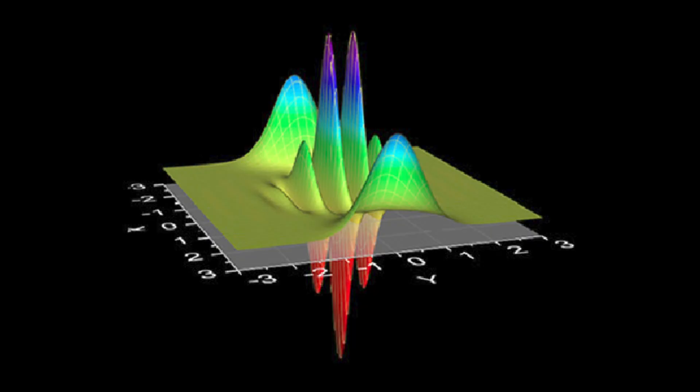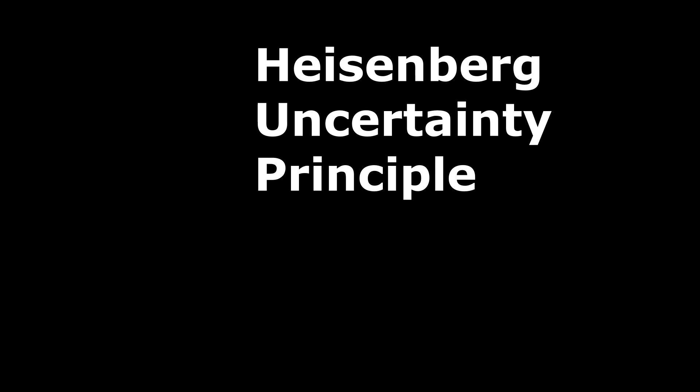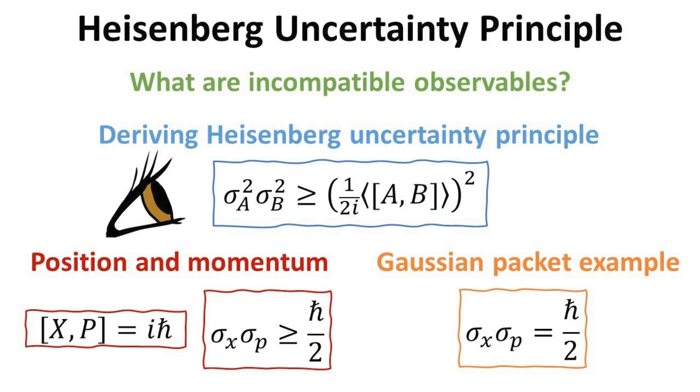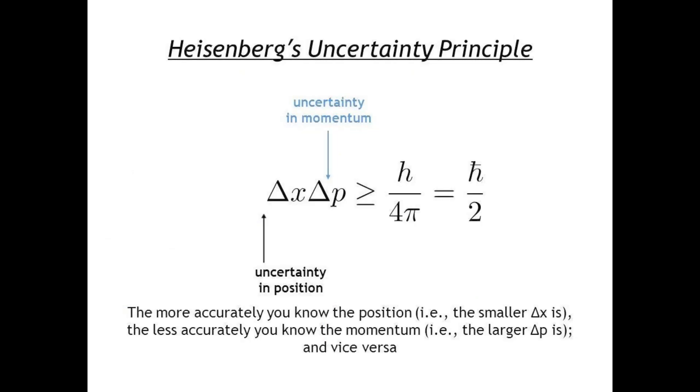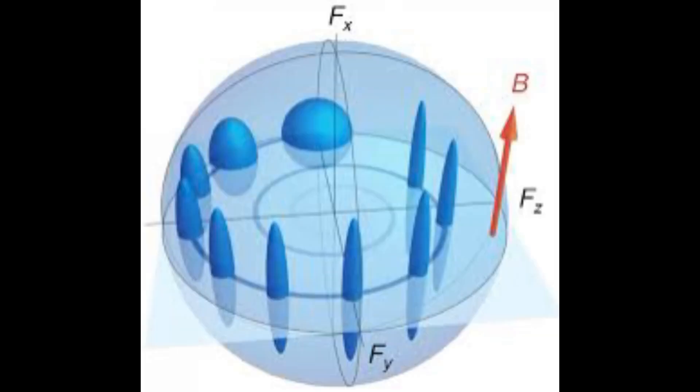The Heisenberg uncertainty principle states that certain pairs of physical properties, such as position and momentum, cannot be measured simultaneously with arbitrary precision. This inherent limitation emphasizes the probabilistic and uncertain nature of quantum systems, and contrasts sharply with the deterministic view of classical mechanics. In particular, the more precisely we determine the position of a particle, the less precisely we can know its momentum, and vice versa.